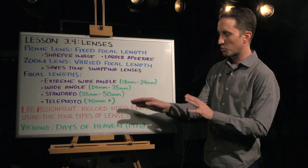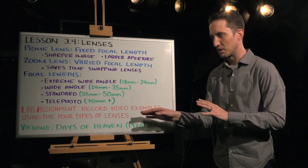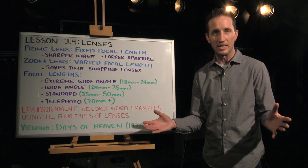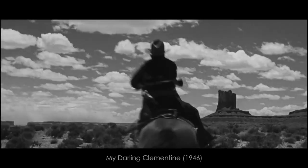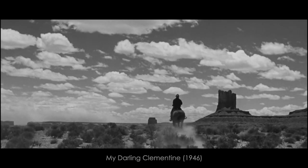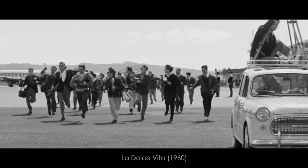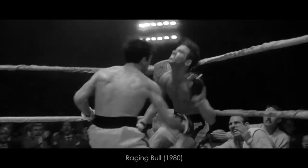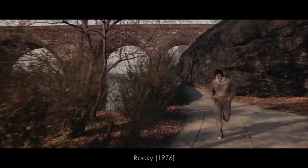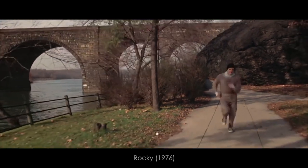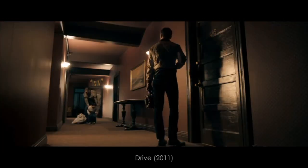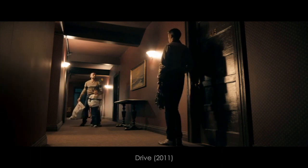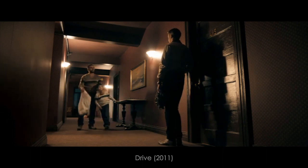Now in the 24mm to 35mm range, we're starting to talk about wide angle lenses. These lenses are great for filming wide shots and accentuating movements — if you have a fight scene, a sporting event, or maybe just a character running. They're also really great for establishing distance between characters, especially in small spaces.